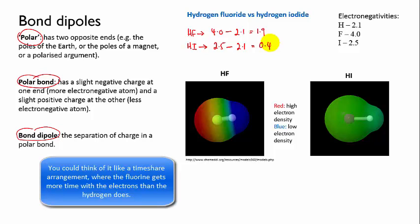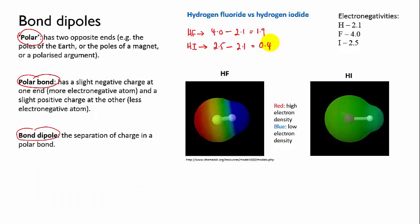Hydrogen iodide, on the other hand, looks green, meaning that the electron density is fairly evenly distributed. You can see there's a slight yellowish hue to the larger iodine atom, and a slight bluish tint to the hydrogen end, indicating that the bond is not completely non-polar, but this is a very weak polarity.